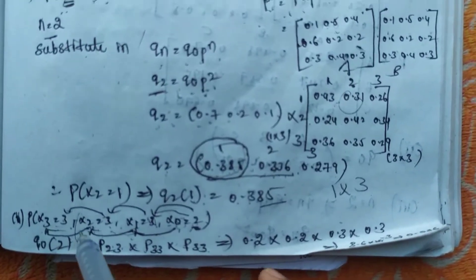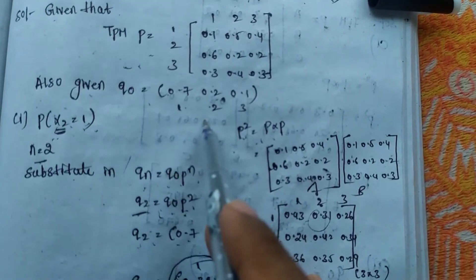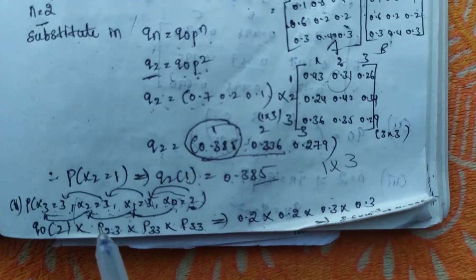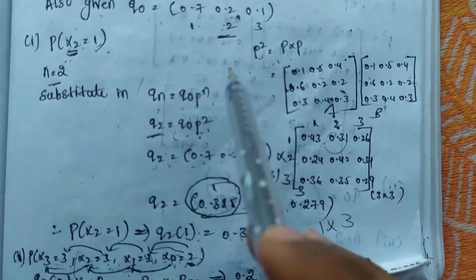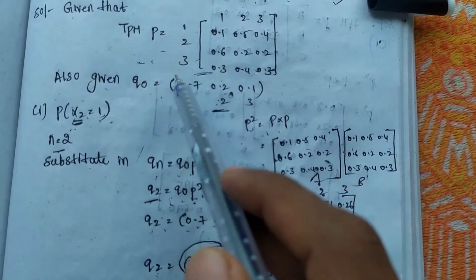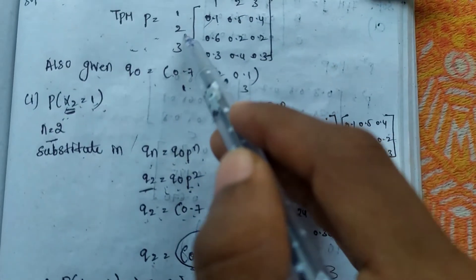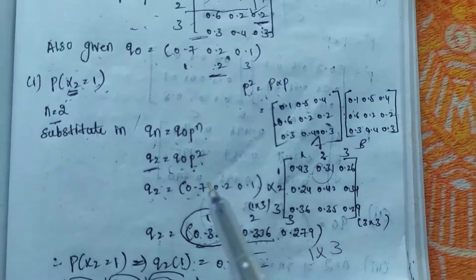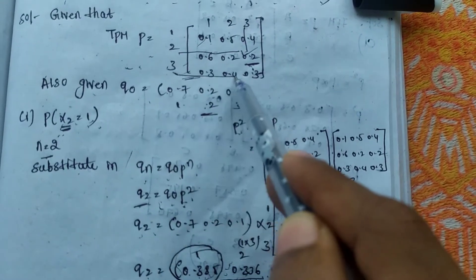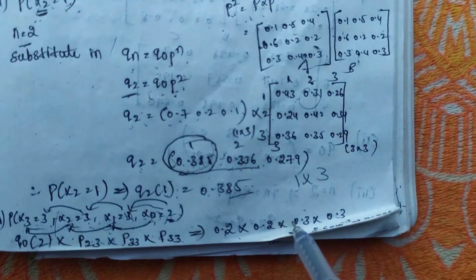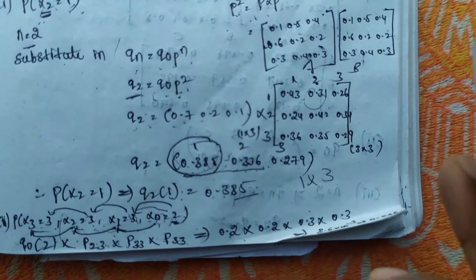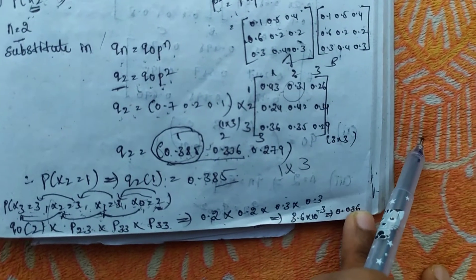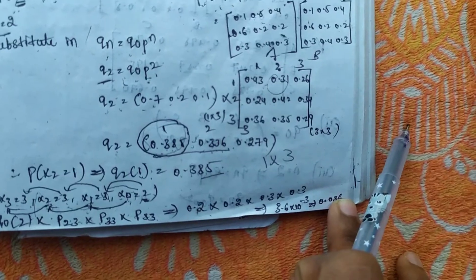Here q(0) of 2 is 0.2. From the P matrix, P(2,3) = 0.2, P(3,3) = 0.3, and again P(3,3) = 0.3. Calculating 0.2 × 0.2 × 0.3 × 0.3, we get 3.6 × 10⁻³, that is 0.0036.